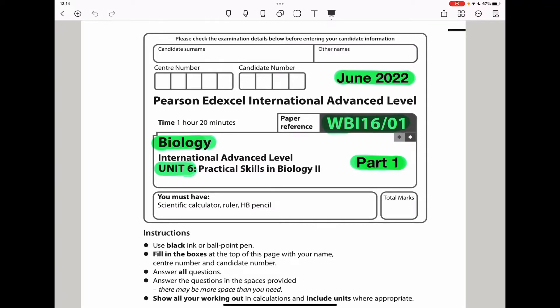Welcome to the Chemistry, Biology, and Math Revision Hub. Today we're doing the Pearson Edexcel International A-Level Biology Unit 6 for June 2022. This is the Part 1 video. I'll make the Part 2 video and put a link below the description box.